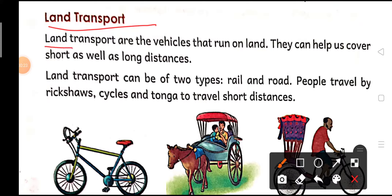Land transport — land transport are the vehicles that run on land. Land transport का मतलब क्या होता है? वो vehicles, वो वाहन जो land पर चलते हैं, उन्हें हम बोलते हैं land transport. So what is the definition of land transport? Land transport are the vehicles that run on land. This you have to write and learn.